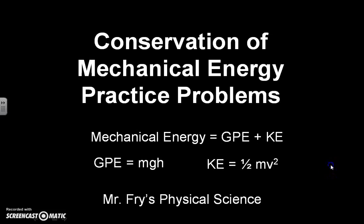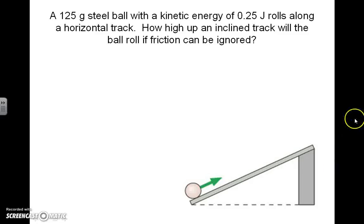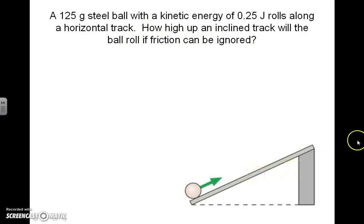I'm going to take you through four practice problems starting with this one. A 125 gram steel ball with a kinetic energy of 0.25 joules rolls along a horizontal track before it hits this ramp. It asks how high up an incline track will the ball roll if friction can be ignored.